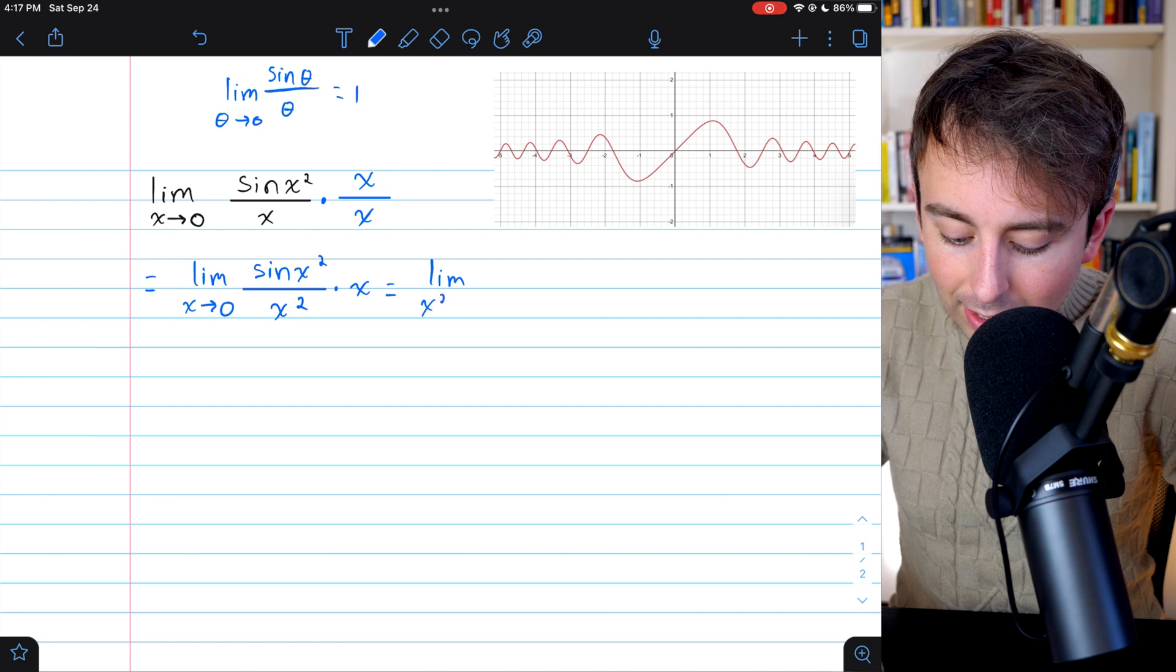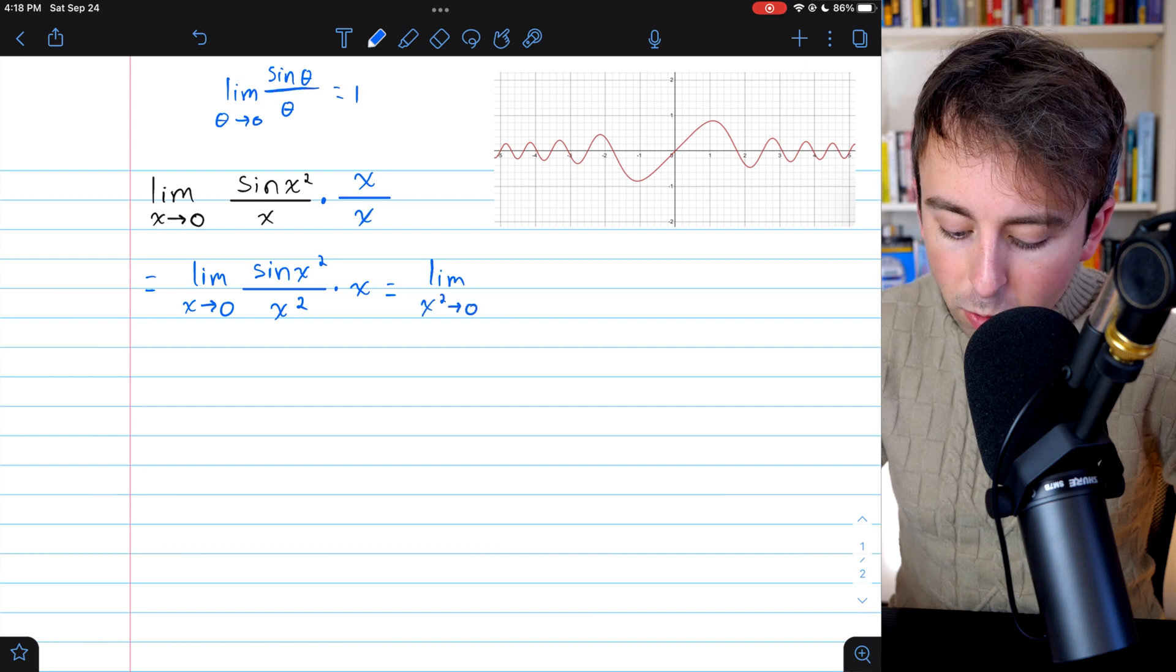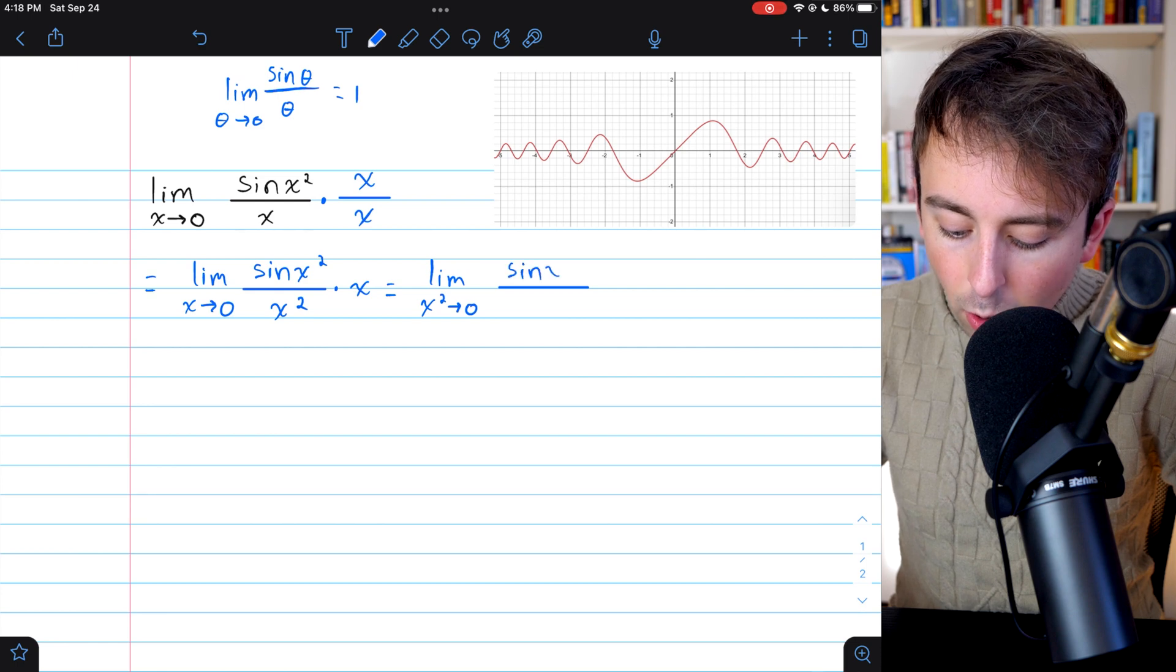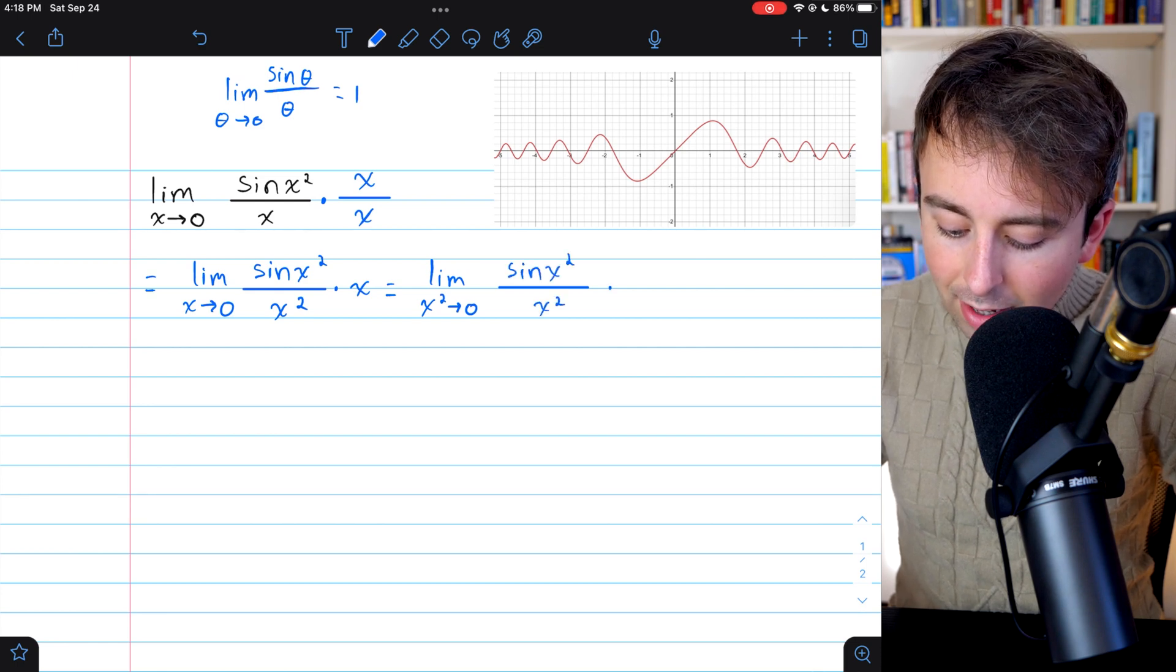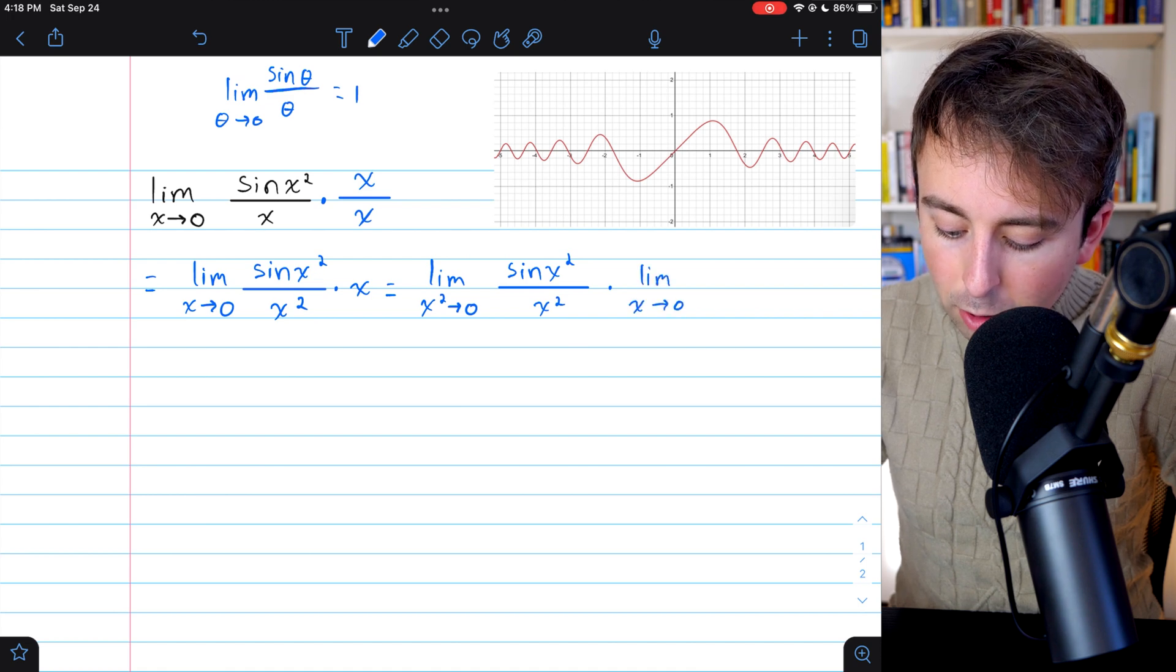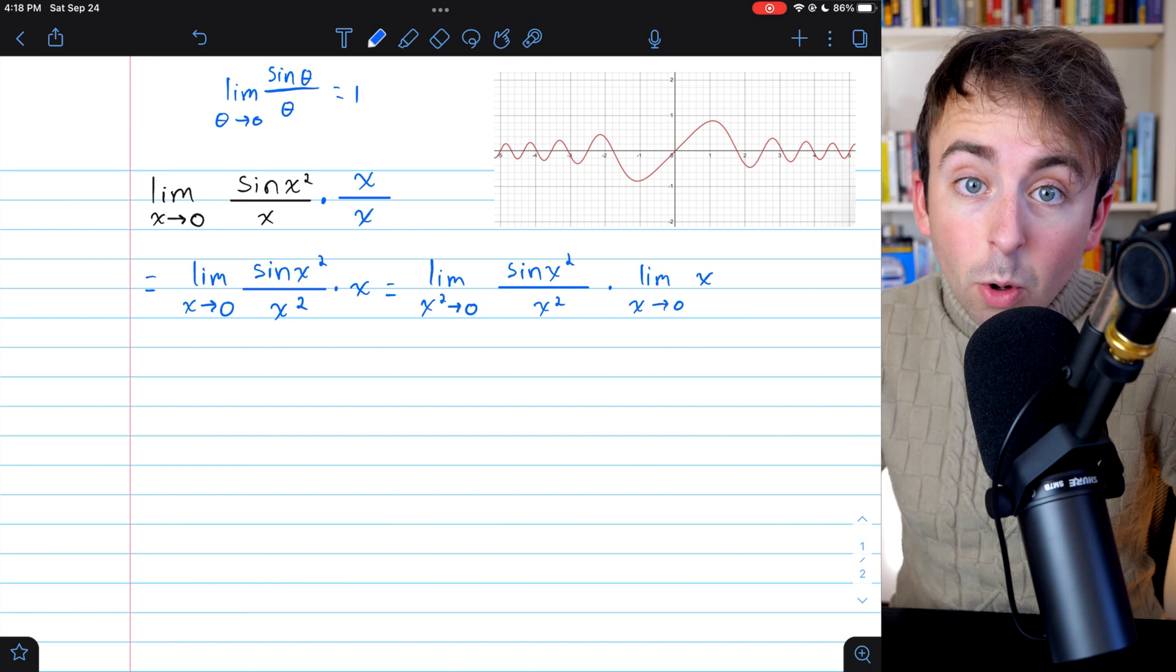So I'm going to write this as the limit with x squared approaching zero of sine x squared over x squared. And then this is getting multiplied by the limit as x approaches zero of x. And we're almost done.